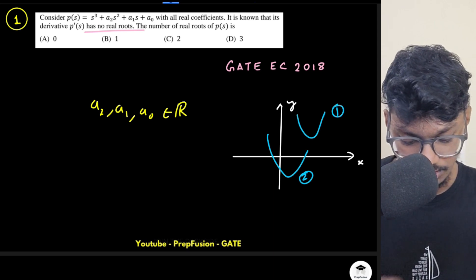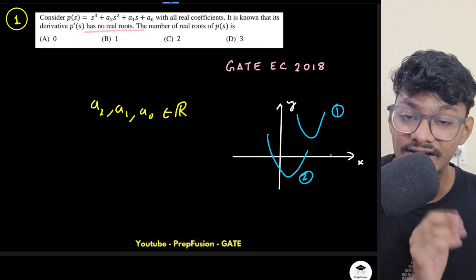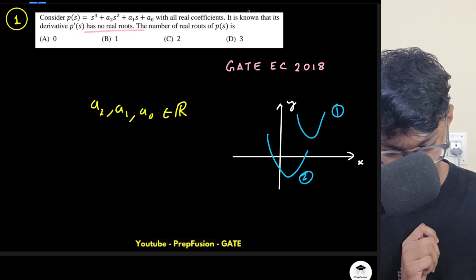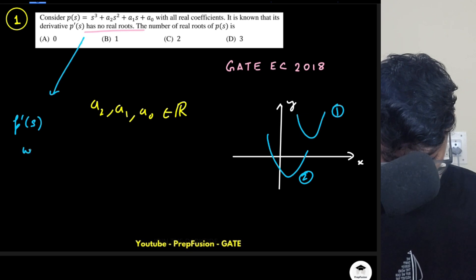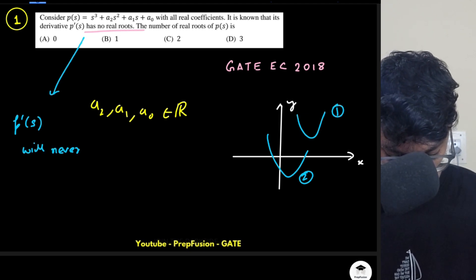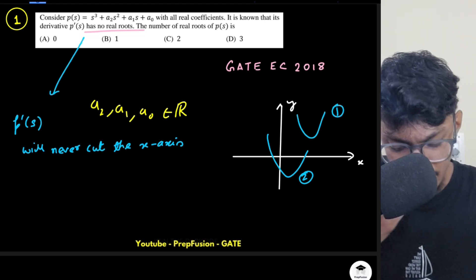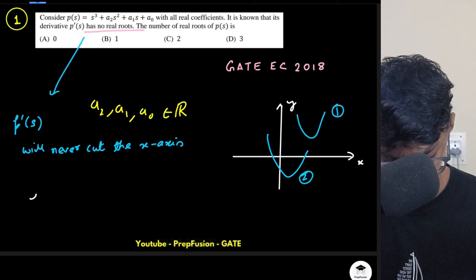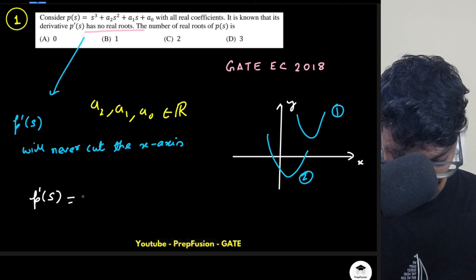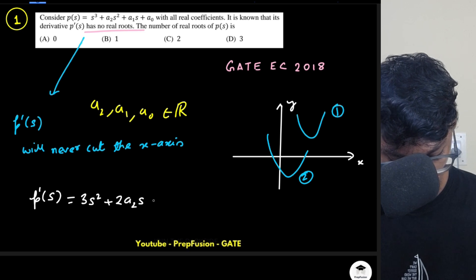So that is what roots mean. If p'(s) has no real root, that means p'(s) never cuts the x-axis. Now I need to differentiate p(s) with respect to s. Differentiating gives p'(s) = 3s² + 2a₂s + a₁.